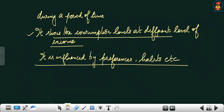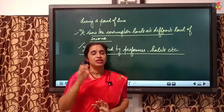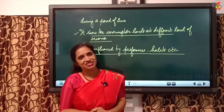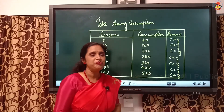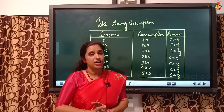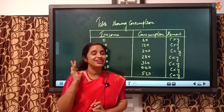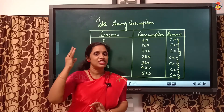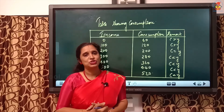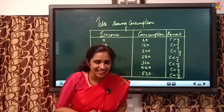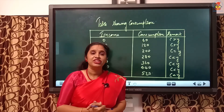Consumption is also influenced by preferences, taste, and habits, along with income. Consumption is the function of income, which says that when income increases, consumption also increases. Regarding the increasing pattern, we explained marginal propensity to consume: when income increases, consumption also increases but less than the increase in income, because a part of the increase in income is used by consumers to save.